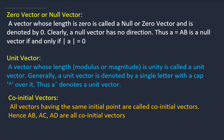Now let us look at different types of vectors. The first is the zero or null vector. Suppose you start from a point and after some time return to the same point. The starting and ending point are the same — represented as ĀA — so the magnitude is zero. A vector whose magnitude is zero is called a null or zero vector, denoted by zero with a bar or arrow.